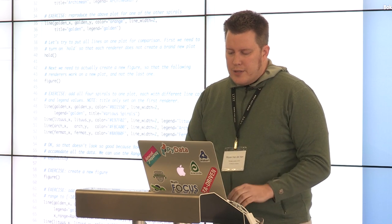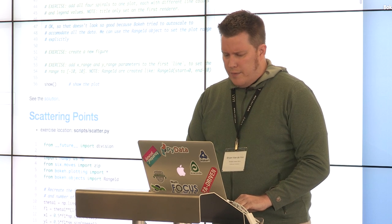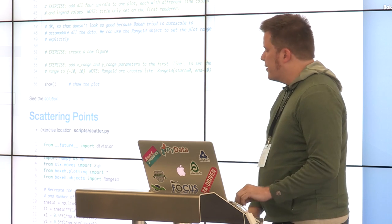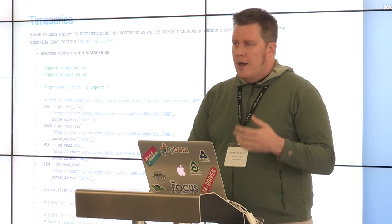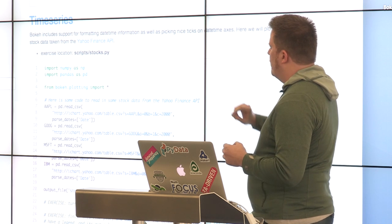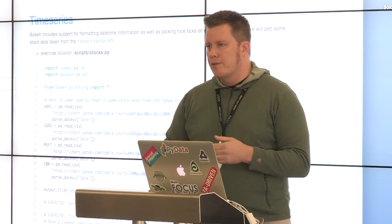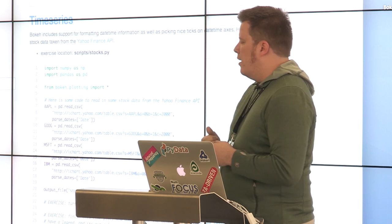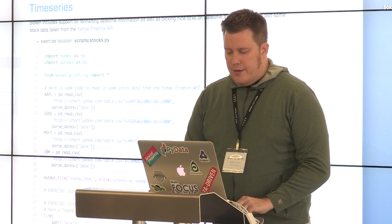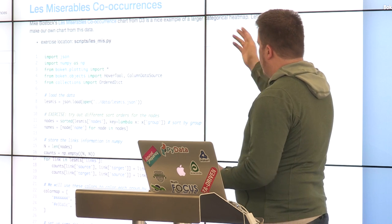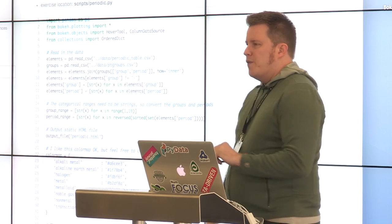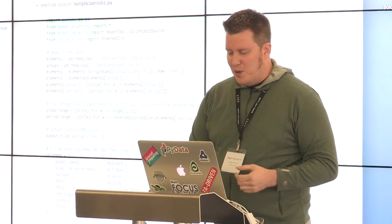There are quite a number of exercises — five or six under basic. Then I have what I call topical exercises, which deal with specific types of plots: time series, histograms, box plots, heat maps, and bar charts. If you're interested in one of those topics, feel free to jump in after the basic exercises. There are also a few advanced exercises — the Les Miserables co-occurrence chart and the periodic table. There's no way we're going to make it through all of this, but now you have it to take with you.